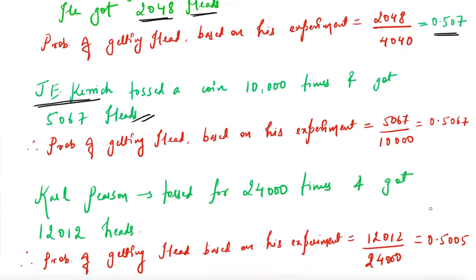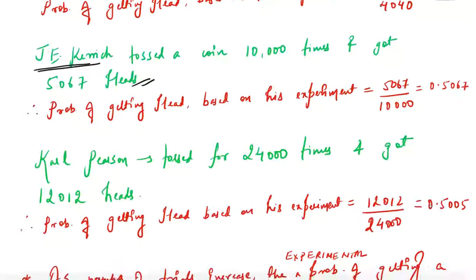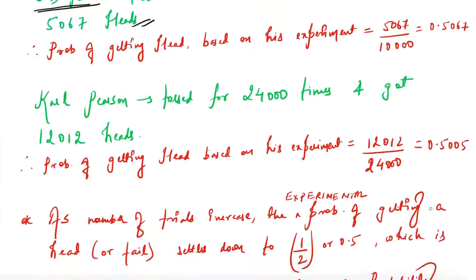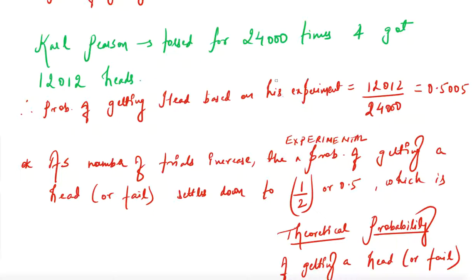A third person, Carl Pearson, did the experiment 24,000 times and got 12,012 heads. The probability of getting a head based on his experiment is 12,012 divided by 24,000, which equals 0.5005.